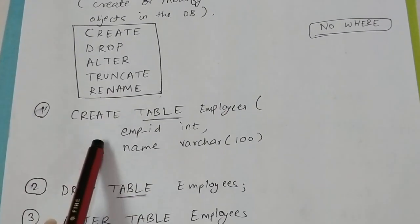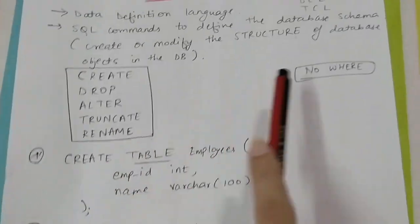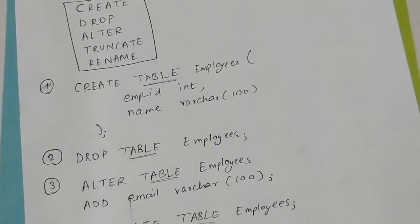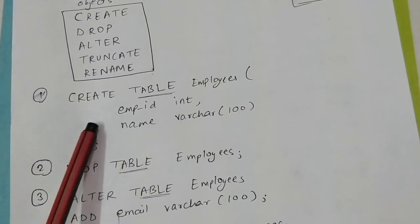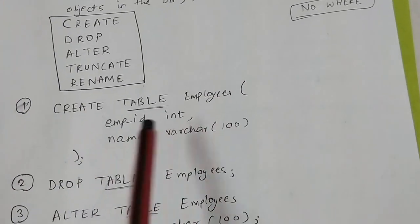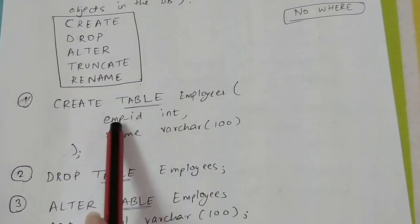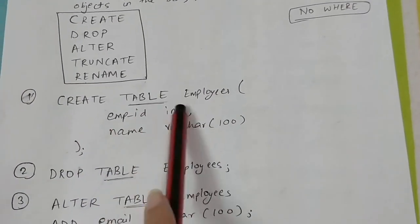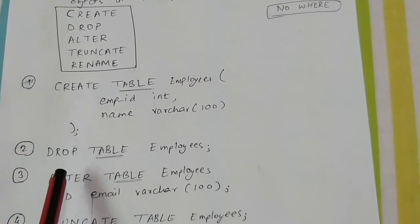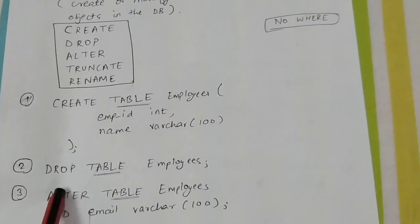The first DDL command is CREATE, which is used to create a database object such as a table. For example: CREATE TABLE employees, followed by the column names and their data types.